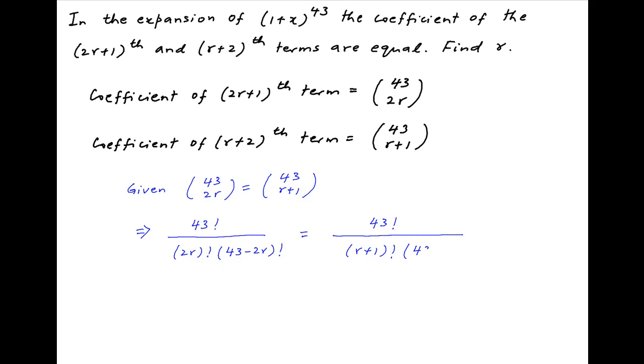Now 43! cancels out in the numerator on both sides, and taking the reciprocal of both sides we get (2r)!(43-2r)! equals (r+1)!(42-r)!.